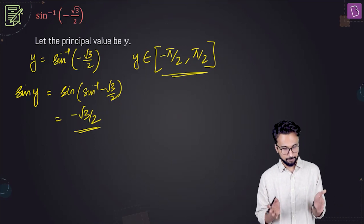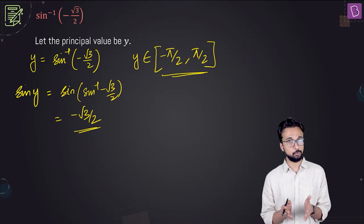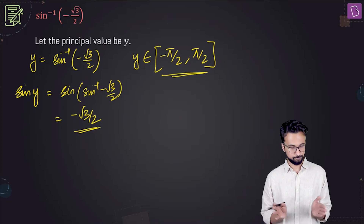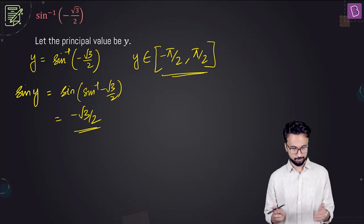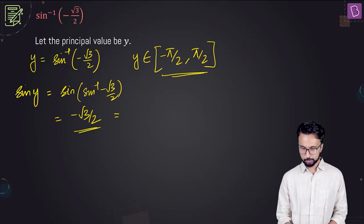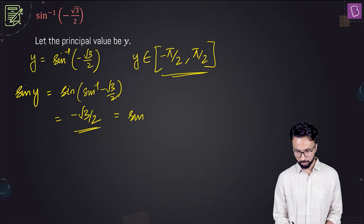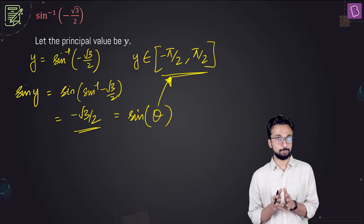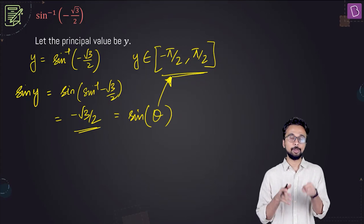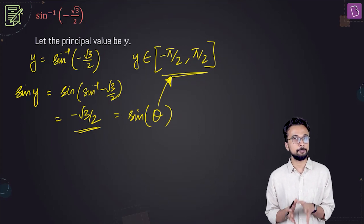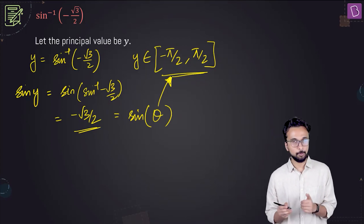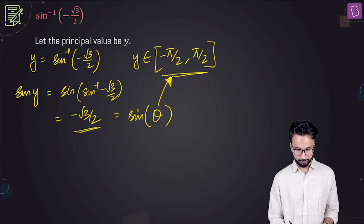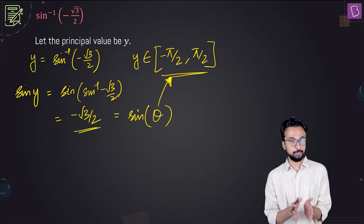So we have sine y equal to minus root 3 by 2. We need to find the principal value of y, so this should be written as sine of some angle which is between minus pi by 2 and plus pi by 2 — that angle will be our answer, the principal value. Since sine y is negative, y is between minus pi by 2 and 0.